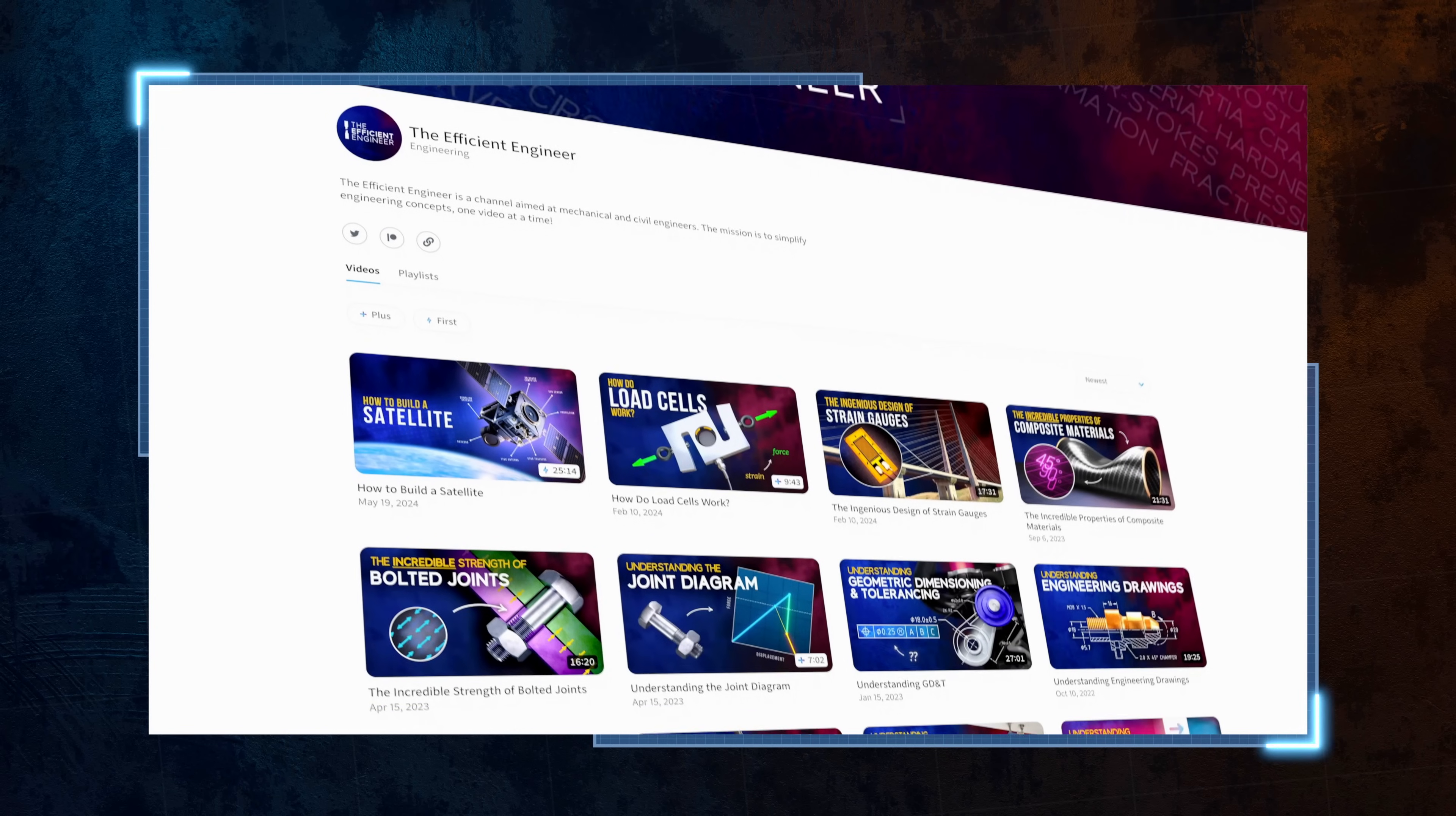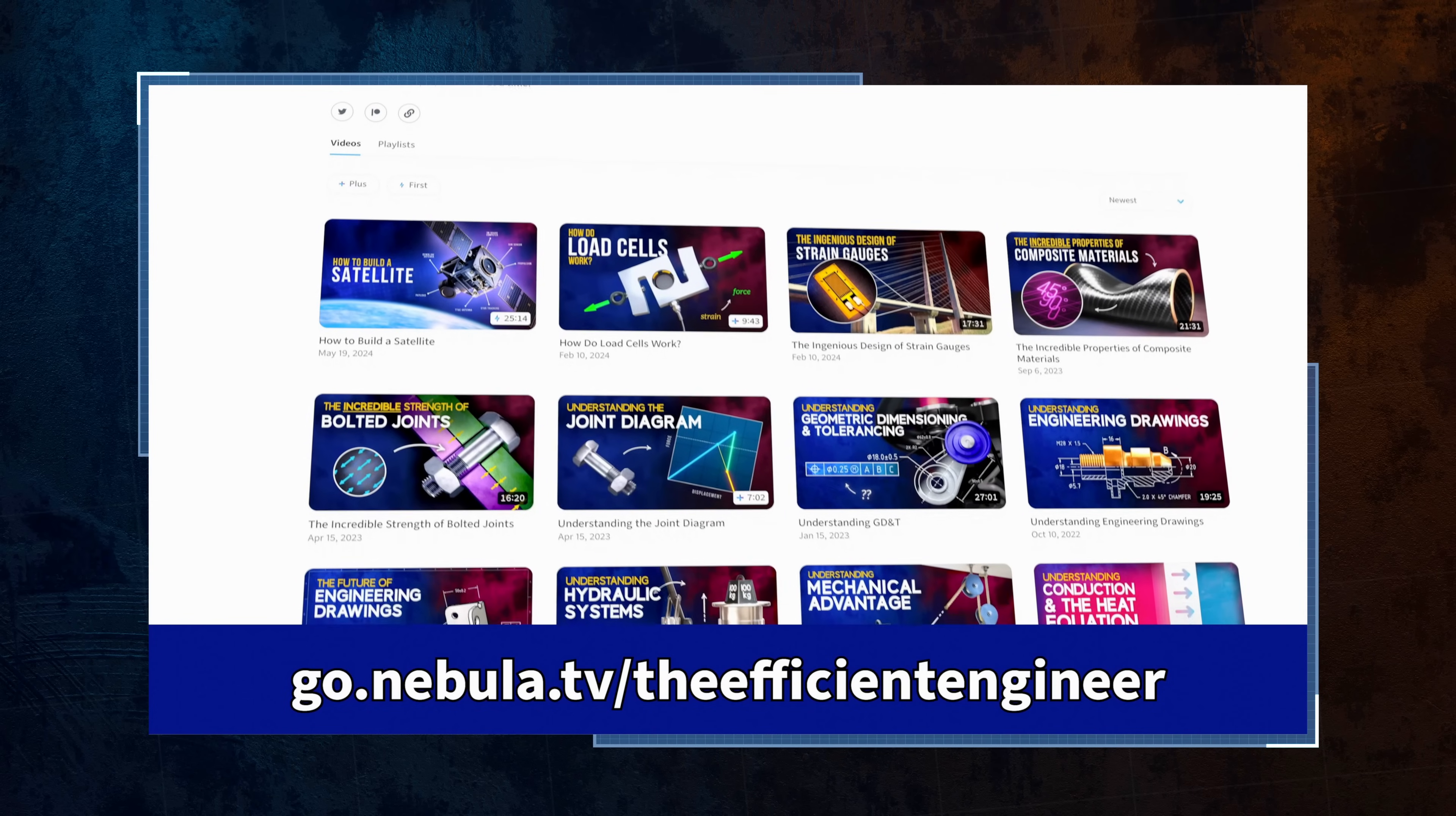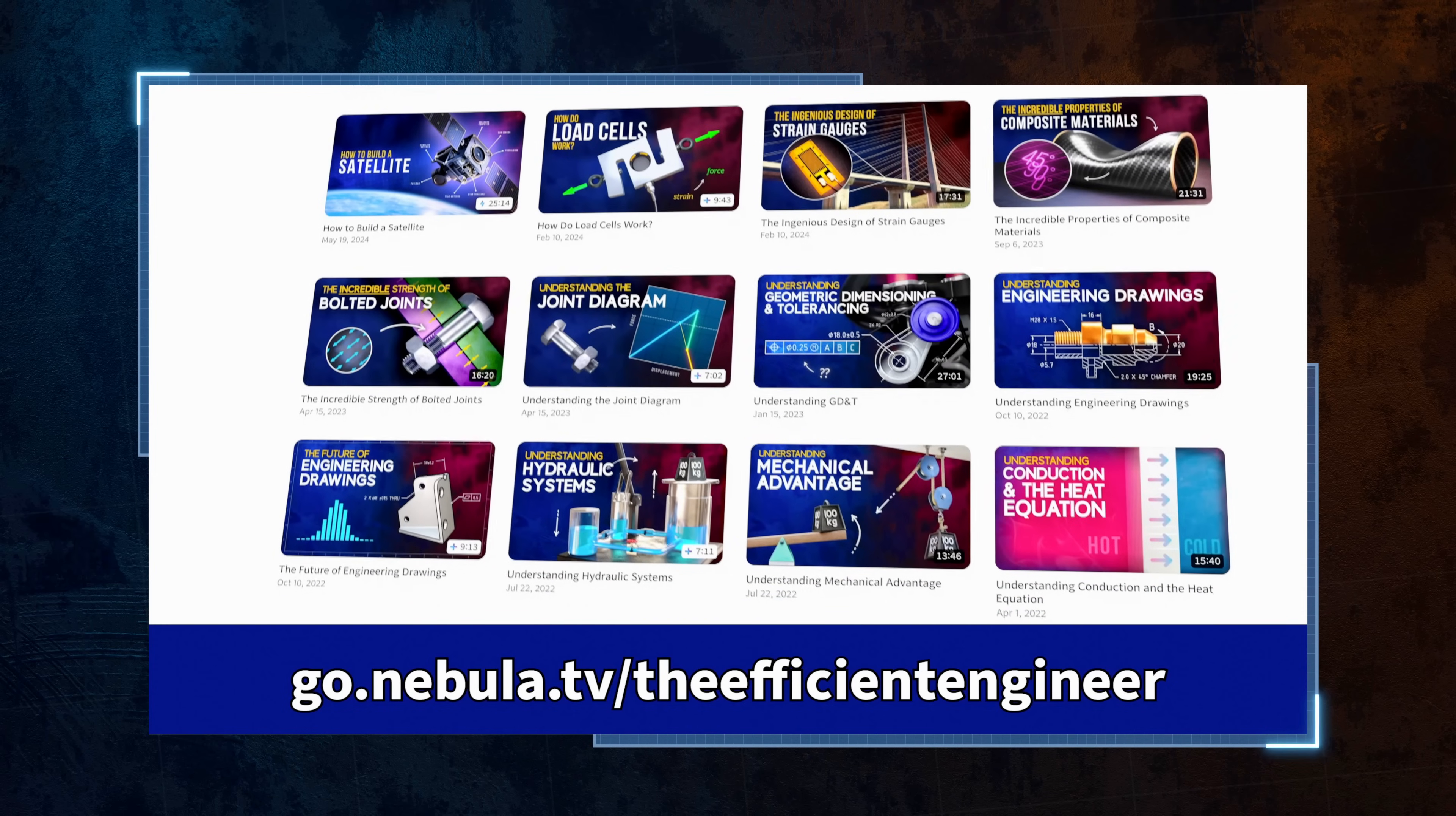To get access to all of this and my own Nebula videos, including the Momentum companion video, sign up at go.nebula.tv slash TheEfficientEngineer, and you'll get a 40% discount on the annual plan, which works out as just $3 a month.